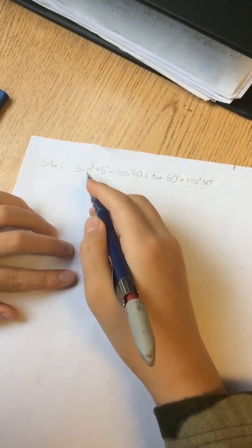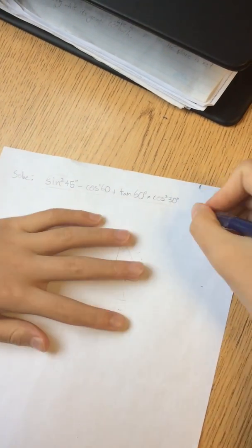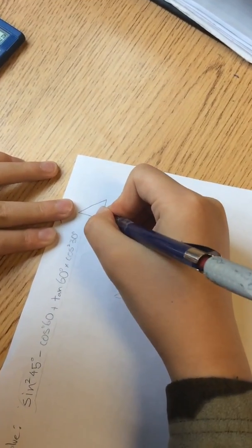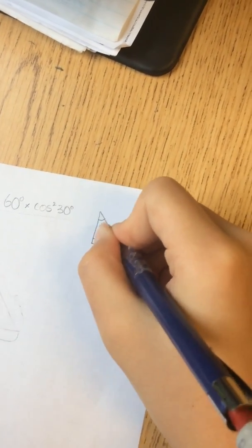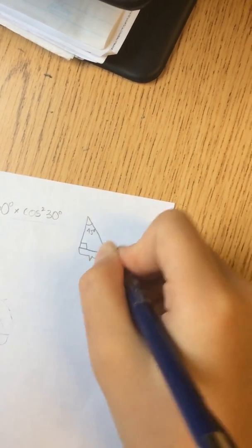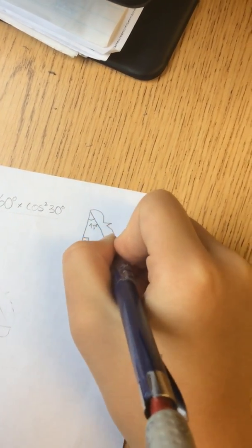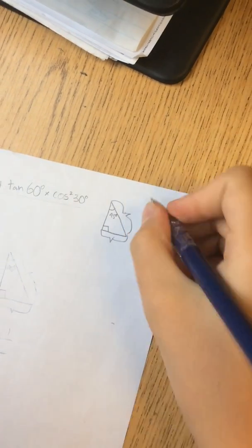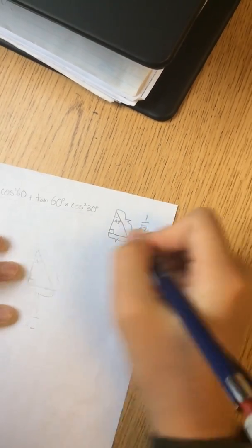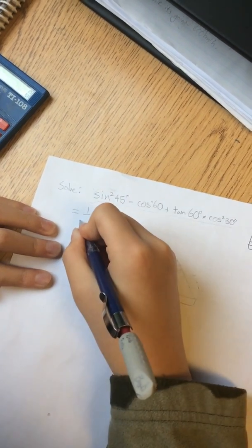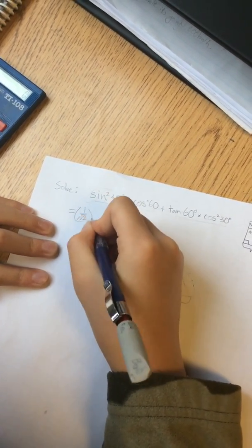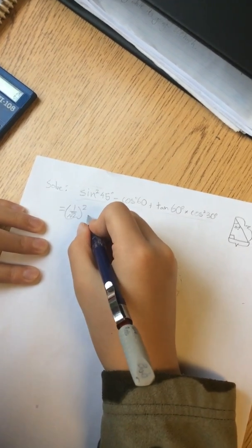Okay, so first you have to find sine squared 45 degrees. So first, you have to draw a 45 degree right triangle. And since this is a sine, the sine of this 45 degree angle would be this and this. As we know, the ratio between this and this is 1 over square root of 2. The square of that would be 1 over square root of 2 squared. Oh my god, what is this?